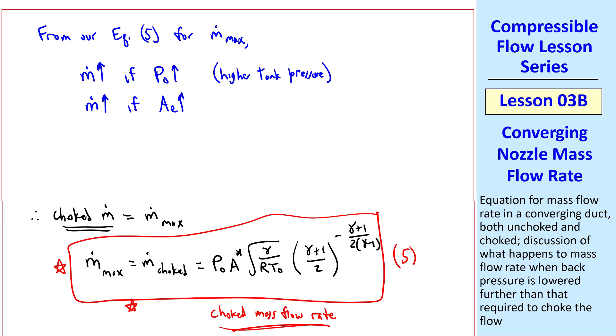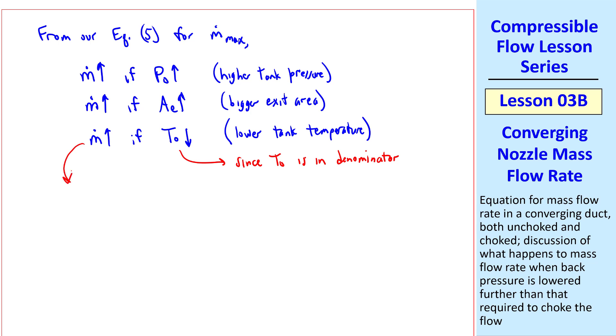m-dot goes up if exit area goes up, like I illustrated with the bicycle tire previously. If you have a bigger hole, in other words a bigger exit area, you should get more flow rate, which also makes sense. But m-dot goes up if T₀ goes down. In other words, a lower or smaller tank temperature. That one's not so obvious. But that's the case since T₀ is in the denominator of equation 5. How do we explain this one?